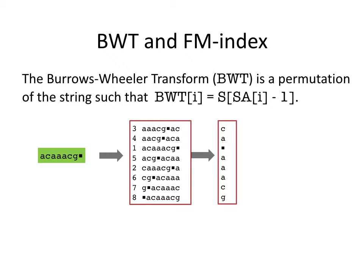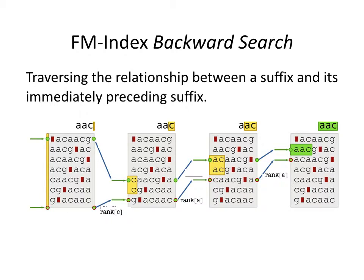The Burrows-Wheeler transform of a string is a permutation of its symbols. They are sorted according to the immediately following suffix of each letter. The left box illustrates these sorted suffixes, just like a suffix array. The right box shows the preceding character of each suffix, and is the BWT. Each position in the BWT corresponds to a suffix in a suffix array. The BWT combined with auxiliary data structures is known as an FM index. It encodes a relationship between a suffix and its immediately preceding suffix, and the relationship can be traversed, as shown by the blue arrows, in four iterations of a process known as backward search.